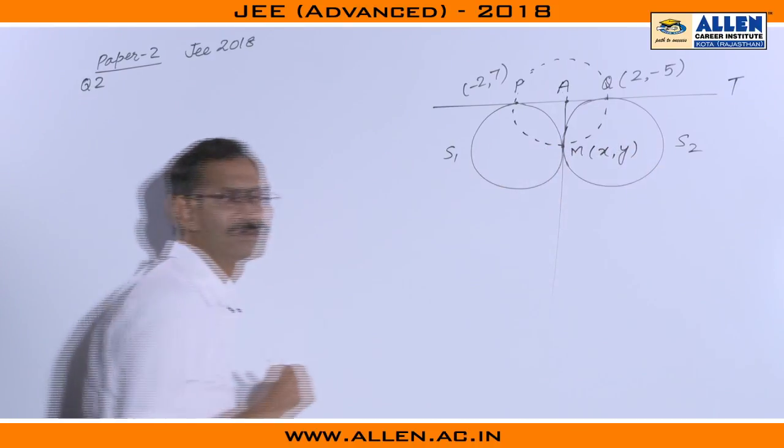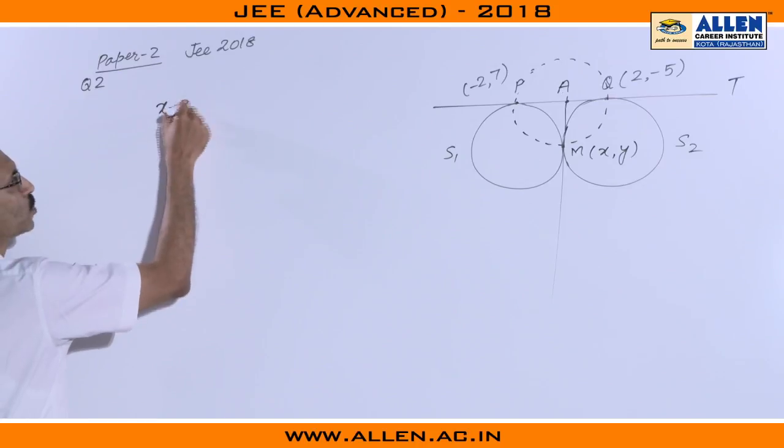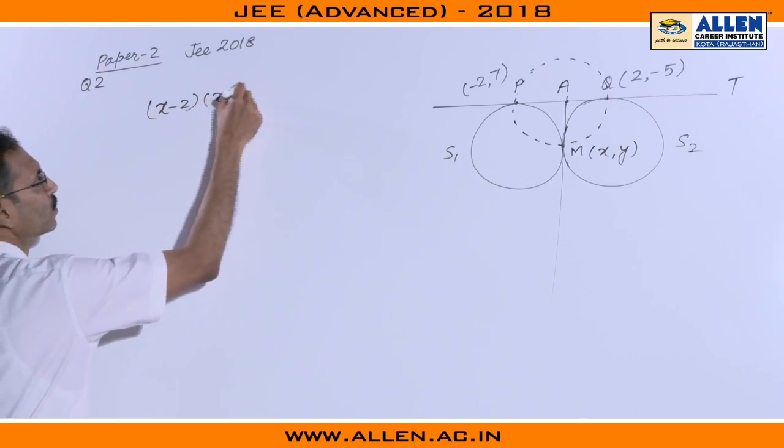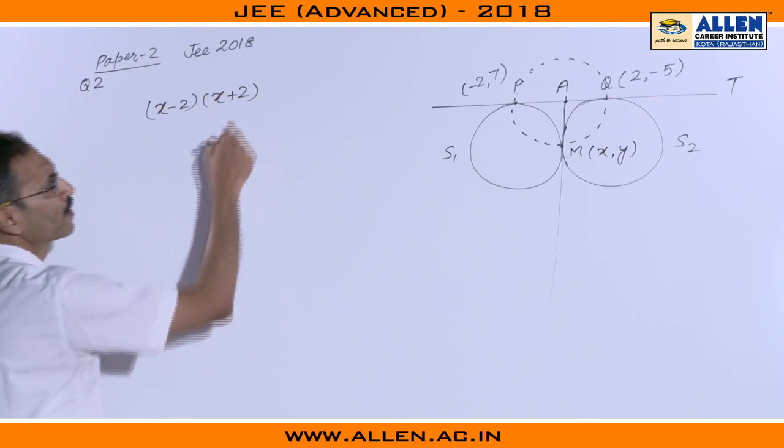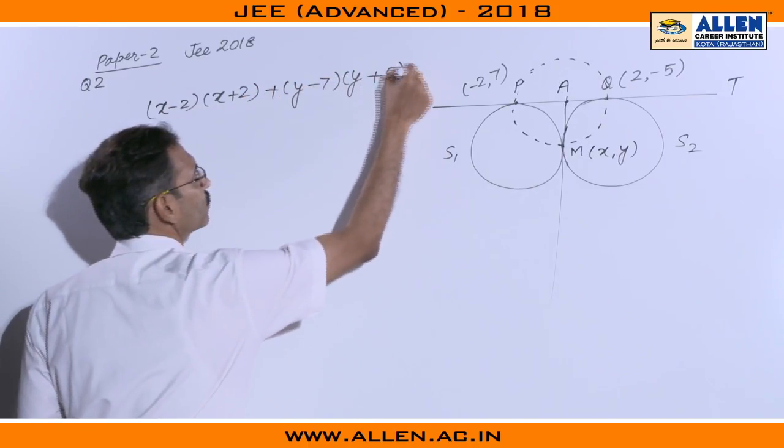I can write the equation of locus or the circle as X minus 2 into X plus 2 plus Y minus 7 into Y plus 5 equals to 0.